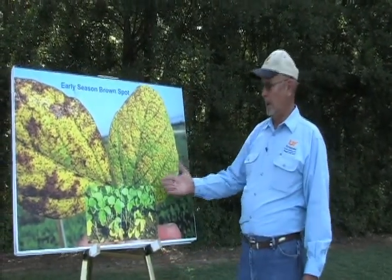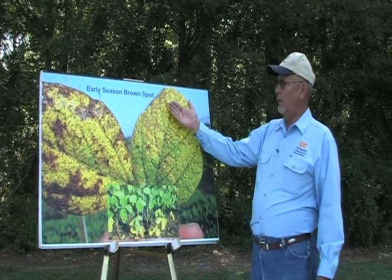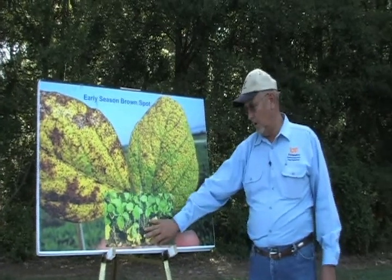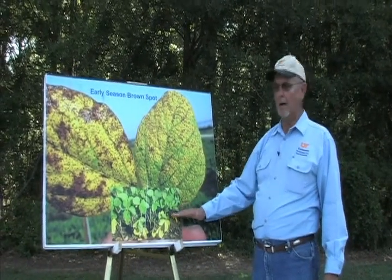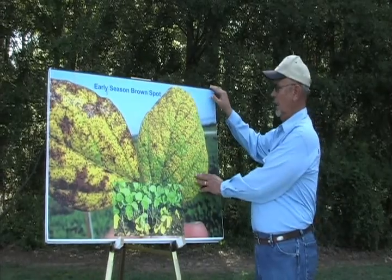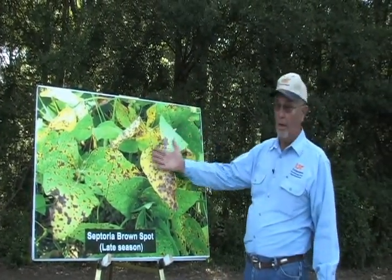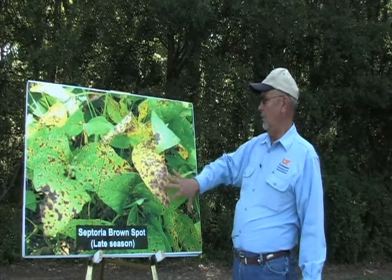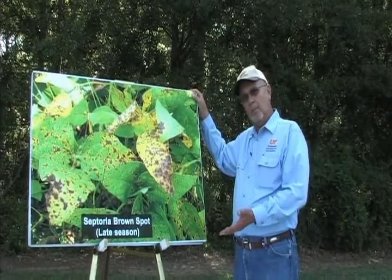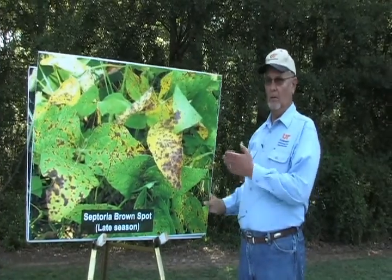Another disease that's virtually in every soybean field is Septoria brown spot. It has two phases: one is early season where the lower bottom leaves turn yellow and drop off, and then later in the season we see brown spot really causing defoliation. The more you plant soybeans after soybeans, the more of these diseases you have.